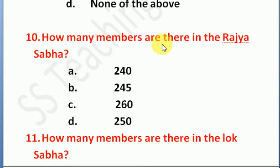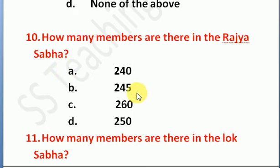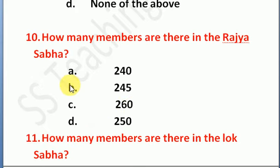Question number 10: how many members are there in the Rajya Sabha? Option A: 240, Option B: 245, Option C: 260, Option D: 250. The right answer is Option B — 245 members are there in the Rajya Sabha.